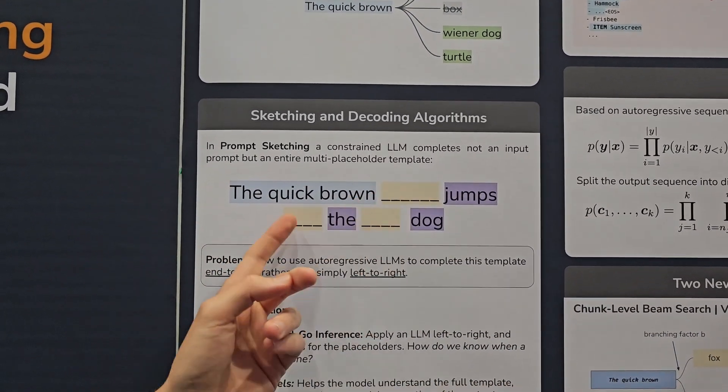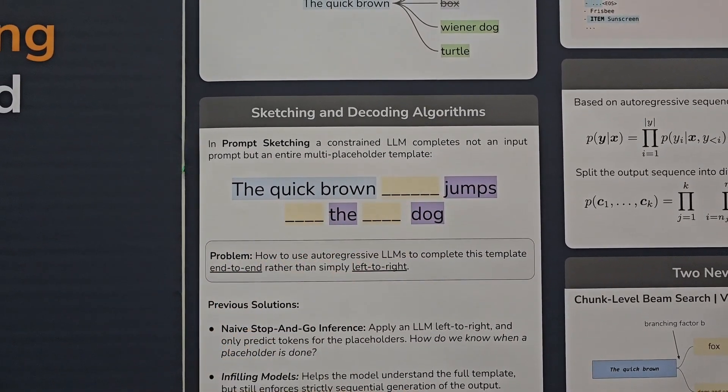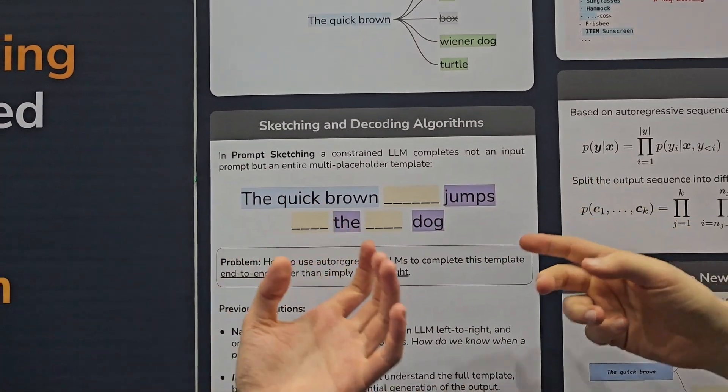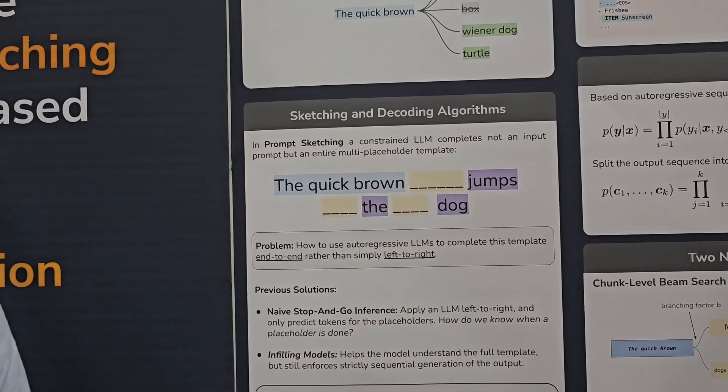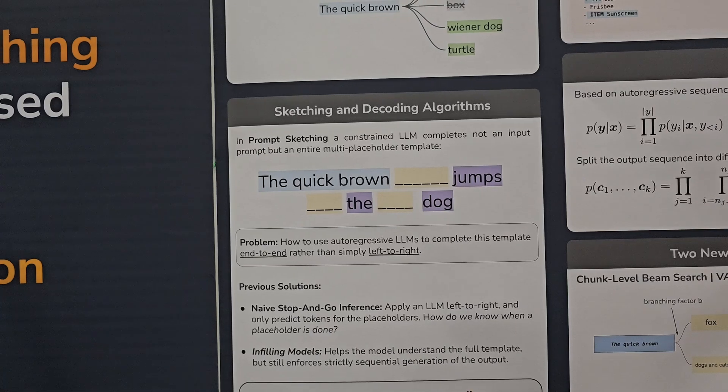For example, here the language model should fill in all the yellow gaps, knowing that these violet words will appear in between. And now the optimal way to do this would be to maximize the posterior probability of the whole filled in sequence, but this is not feasible using autoregressive models.